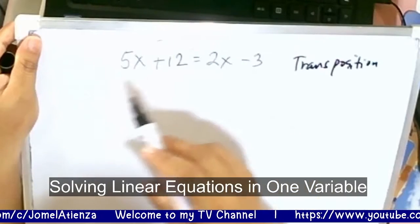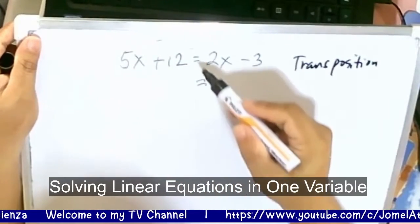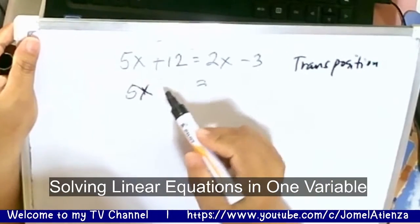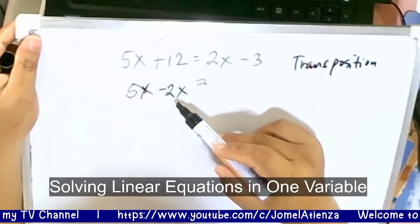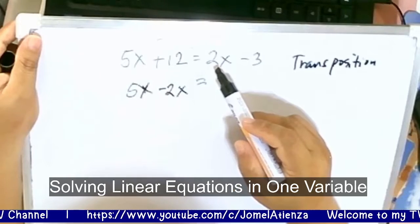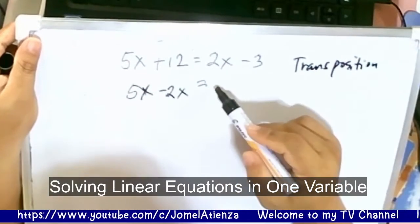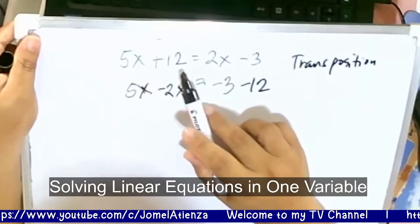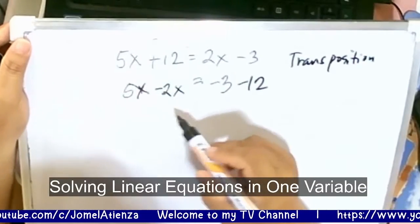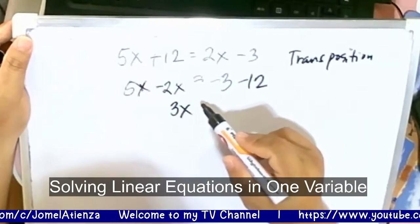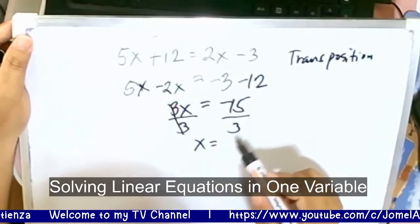So we have 5x minus 2x on the left side. The positive 2x from the right side becomes negative 2x when transposed, which is the subtraction property of equality. Then negative 3 minus 1 on the right side — the positive 1 from the left becomes negative 1 when transposed. Simplifying, we get 3x is equal to negative 4. Dividing both sides by 3, x is equal to negative 4 over 3. We divide by 3 because 3 is the numerical coefficient of x.